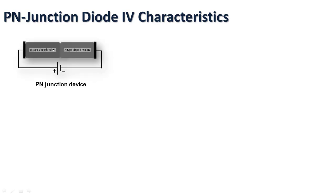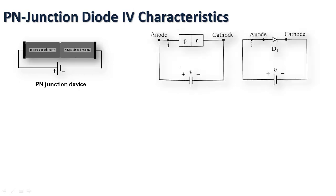The PN junction diode is formed by combining P-type and N-type semiconducting material. It works based on whether the positive terminal of the voltage supply is connected to either the anode or cathode.